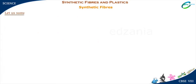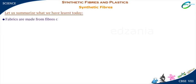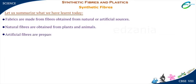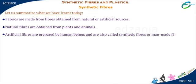Let us summarize what we have learnt today. Fabrics are made from fibers obtained from natural or artificial sources. Natural fibers are obtained from plants and animals. Artificial fibers are prepared by human beings and are also called synthetic fibers or man-made fibers. A polymer is a large chain of small units of monomer.